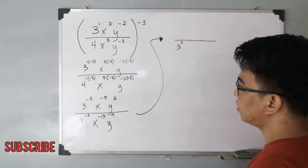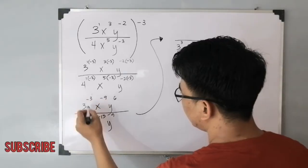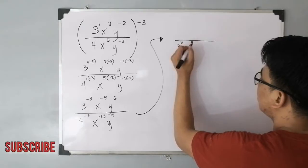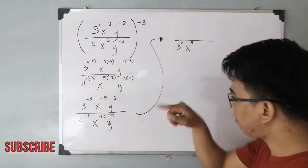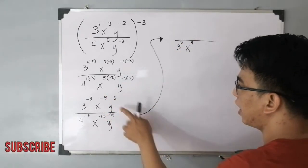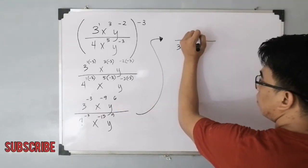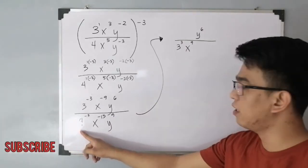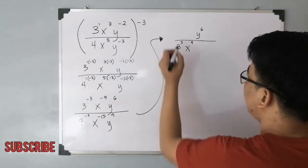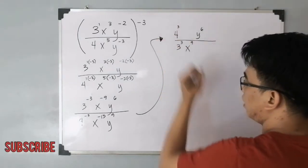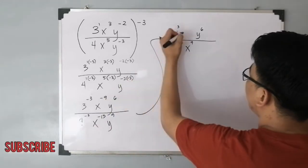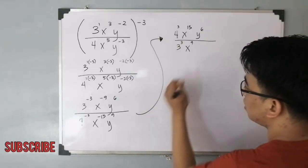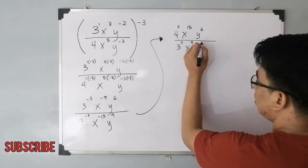And then, so as you can see, okay na tayo dito. So for the x variable, you have x raised to negative 9. Gawin natin positive, nasa denominator na. Ito, magre-remain lang siya sa ibabaw. So you have y raised to 6. And for denominator part, itong 4 raised to negative 3 natin, ilagay natin sa numerator and it will become 4 raised to 3. And for x raised to negative 15, sa numerator, x raised to 15. And this one is y raised to 9.